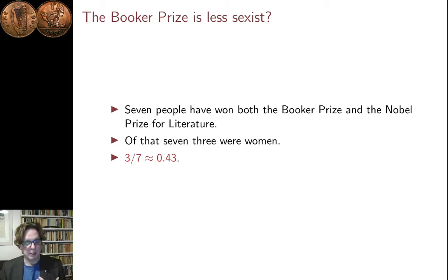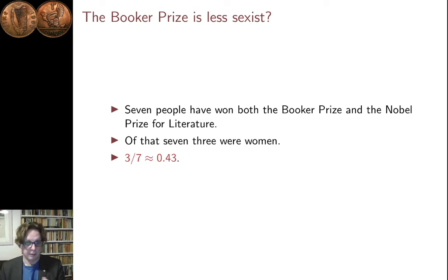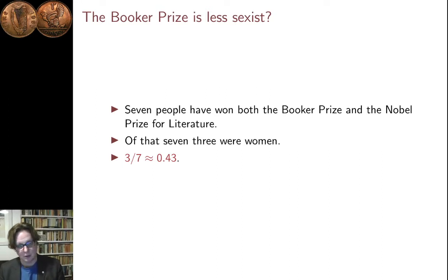The Booker Prize might be a little bit better. I'm going to look at something slightly more restricted, which is the people who've won both the Booker Prize and the Nobel Prize for Literature. There are seven such people, and of that seven, three are women. So if you choose at random a Booker Prize and Nobel Prize winner for Literature, well there's seven to choose from, three of them are women, and so the probability is 0.43 — closer to the 0.5 it should be. That's a special subset of Booker Prize winners, but it will do well for our purposes.